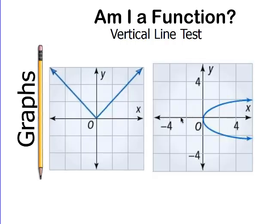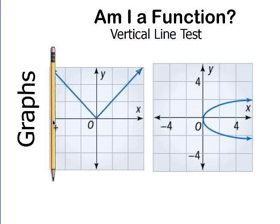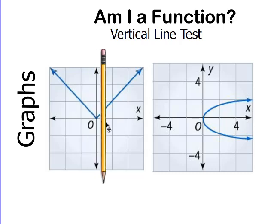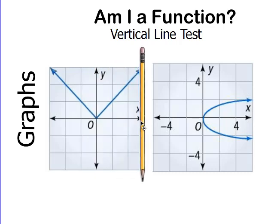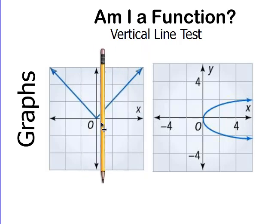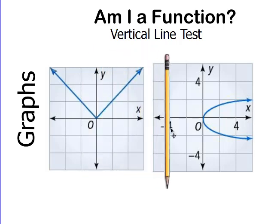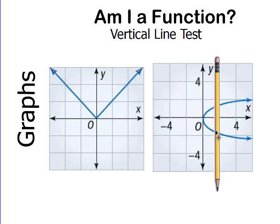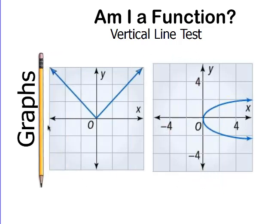So what about these two graphs? Would they be functions? Again, we look at our vertical line test. If I can take this vertical line and move it all the way across that graph, and it only hits the graph one time, then yes, that is a function. So this first one, yes, it's a function. The second one, if I move it all the way across, you'll notice that this vertical line is now hitting the graph in two different places. So that tells me that is not a function. For the vertical line test for a graph, it can only hit the graph one time.